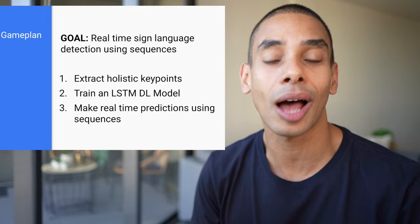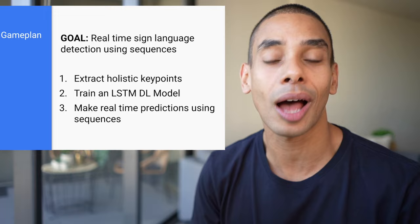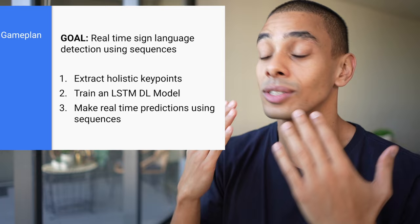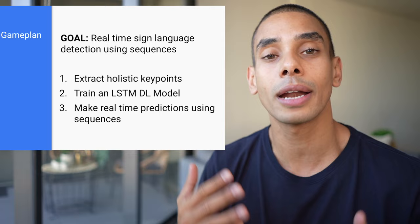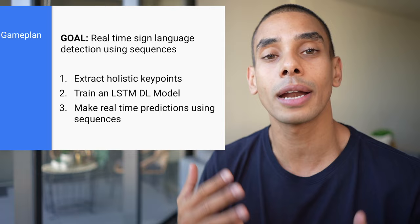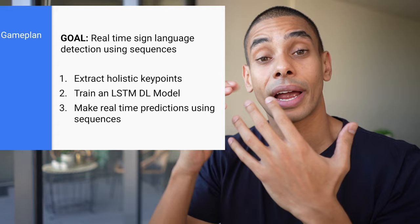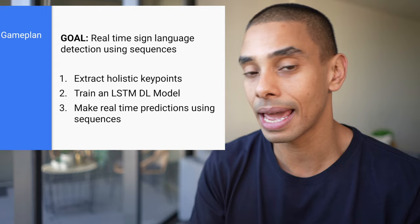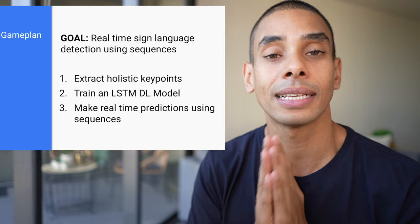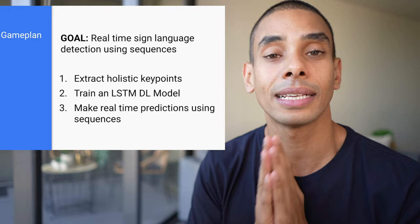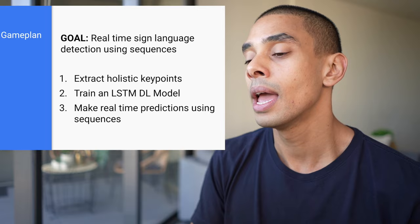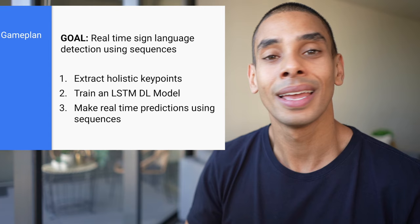We're going to be ambitious in what we try to achieve. The end goal is to produce a real-time sign language detection flow, building it up step by step inside Python to detect different poses and sign language signs. We'll use MediaPipe Holistic to extract key points from our hands, body, and face. Then we'll use TensorFlow and Keras to build an LSTM model to predict the action shown on screen — in this case, sign language signs.